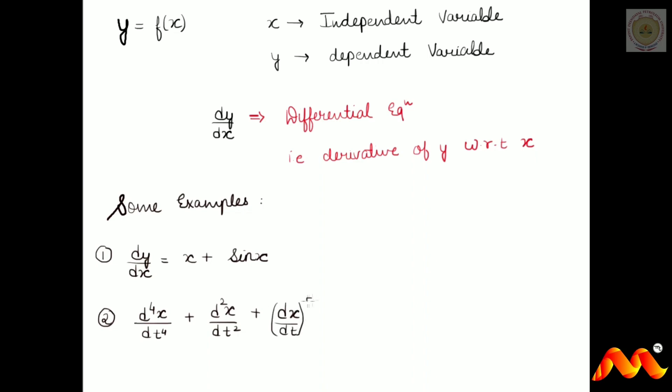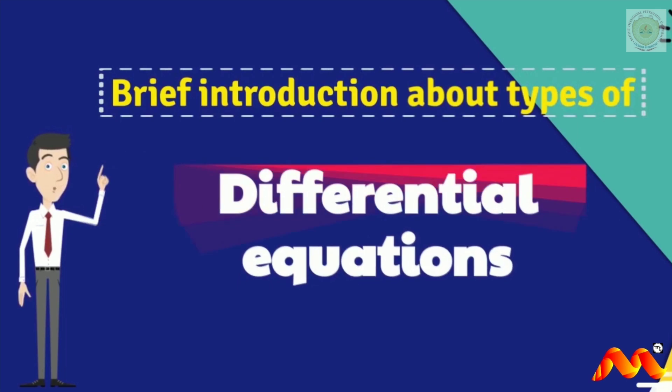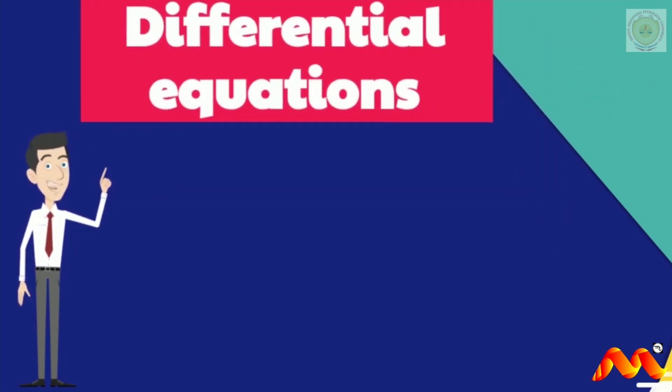In the second example, X is the function of t, where X is the dependent variable and t is the independent variable. dx/dt represents the derivative of X with respect to t. Now let's have a brief introduction about the types of differential equations.